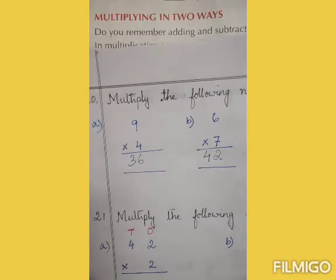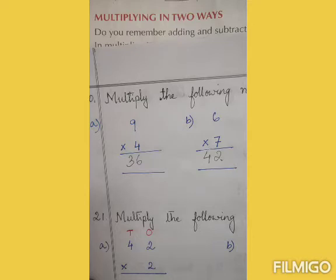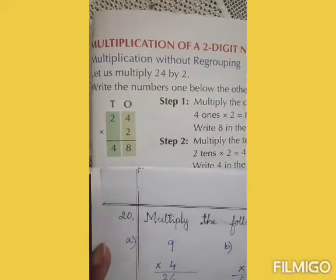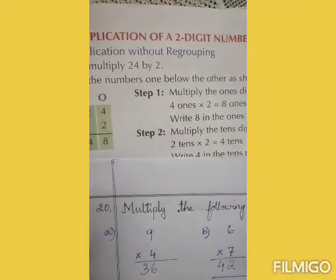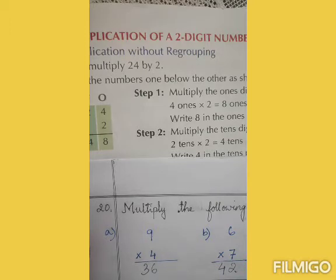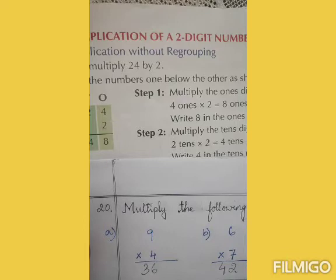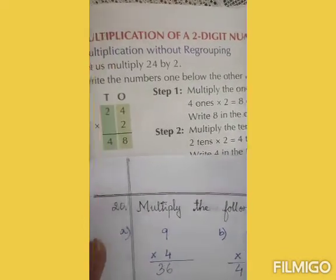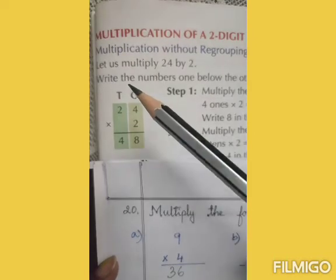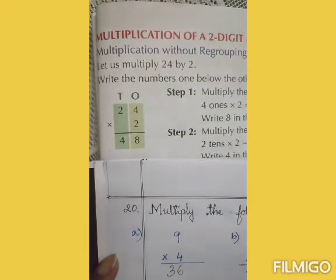Now we will do question number 21. Before starting, let me tell you that you will be doing multiplication without regrouping. Without regrouping means there will be no numbers for carrying — you will not have to carry any numbers while doing the multiplication. You have to place the digits in the ones column and the tens column.